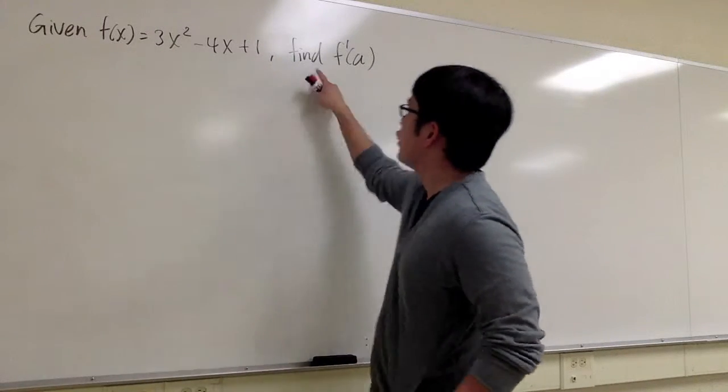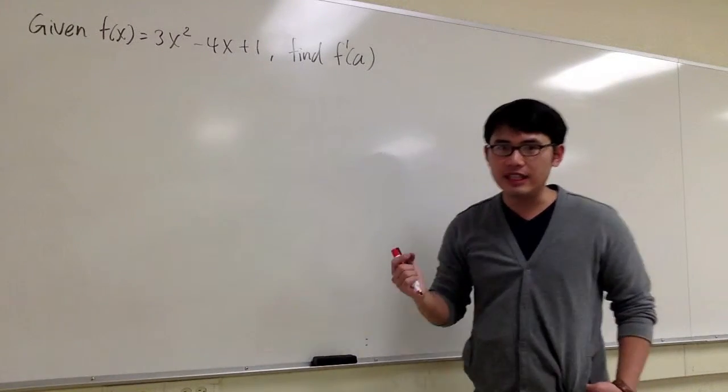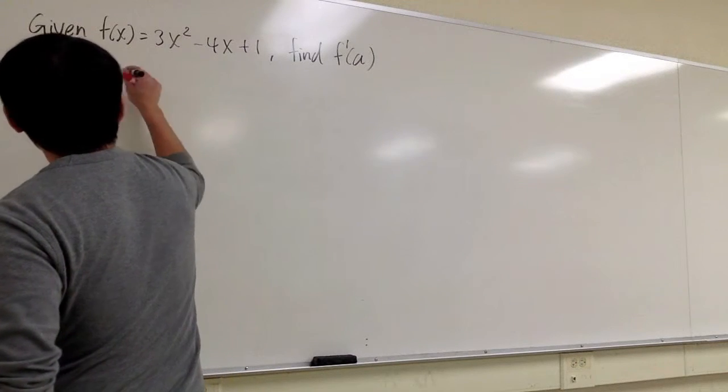Let's look at the same question. f(x) is equal to 3x² - 4x + 1, and then we have to find f'(a), but this time we have to use the second definition, definition 2 of f'(a). So, f'(a) by definition number 2.